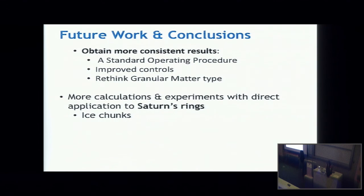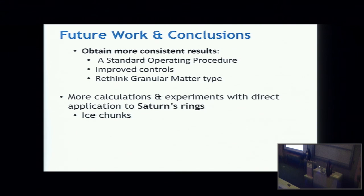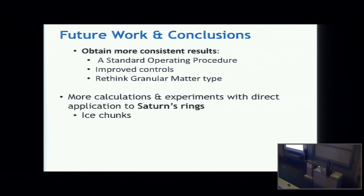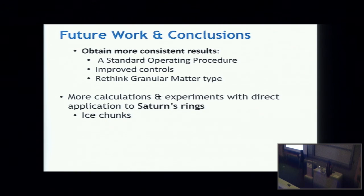In conclusion, I'll fully accept that I won't understand everything about my system, but improvements can be made. I can try to get more consistent results with a standard operating procedure. I can improve controls, for example, controlling humidity and the velocity of the particles. Also, rethinking the granular matter type. This could mean using smaller particles, which would decrease mass and increase charge significantly. Looking forward, it would be interesting to have calculations and experiments directly related to Saturn. This could mean rapidly shooting ice chunks and measuring their behavior.